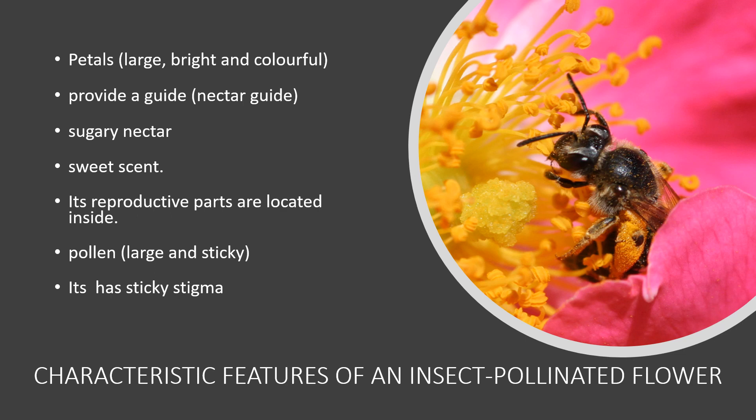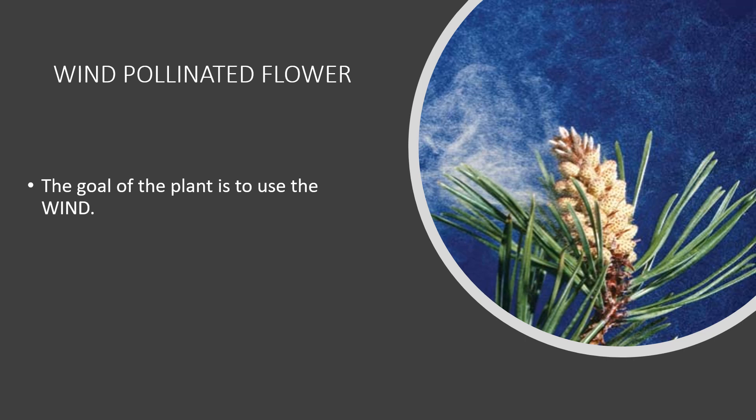How about a plant that chooses wind to pollinate? The wind-pollinated flower uses wind to transfer the pollen grain to the stigma. It should have characteristic features that adapt to using wind to better and effectively move the pollen to the stigma.